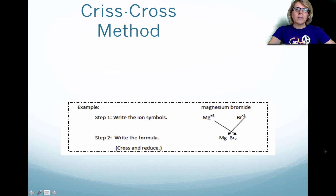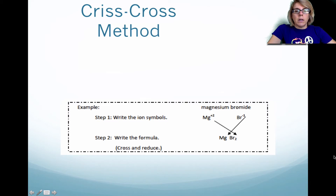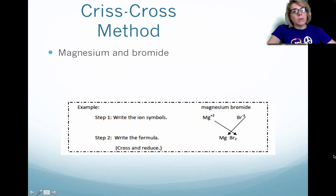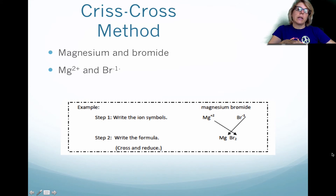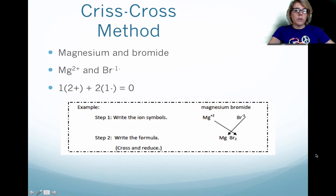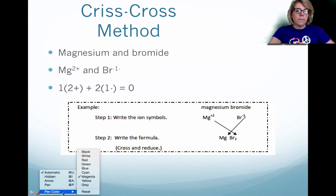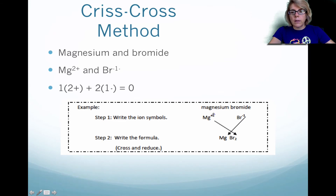Now, to make sense of why we put subscripts where we do, we're going to use the crisscross method to determine the subscripts if we know the metal and the non-metal in our compound. The first thing is to figure out which is the cation and which is the anion — remember, the metal gets named first. You also need to determine the charge that the anion or cation forms, and remember it's based on the group. The alkali metals form a 1-plus charge, the alkaline earth metals form a 2-plus charge, and magnesium is a 2-plus from the alkaline earth. With the crisscross method, you take the charge on the element and bring it down — it becomes the subscript. This is an understood 1 for magnesium.